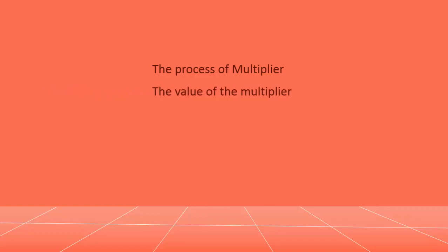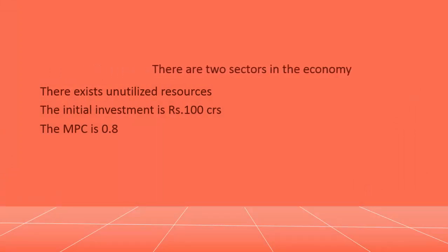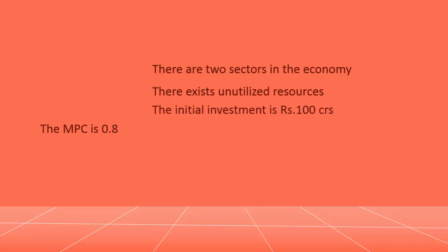To understand the process of the Multiplier, let us assume: there are two sectors in the economy, there exist unutilized resources, the initial autonomous investment is Rs. 100 crores, and the marginal propensity to consume is 0.8.